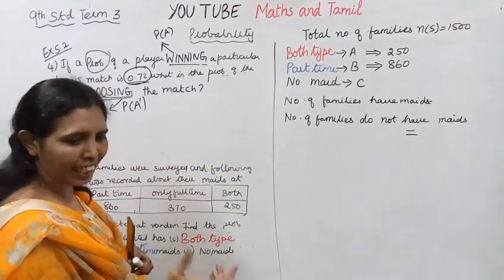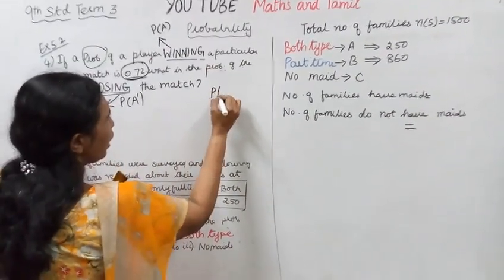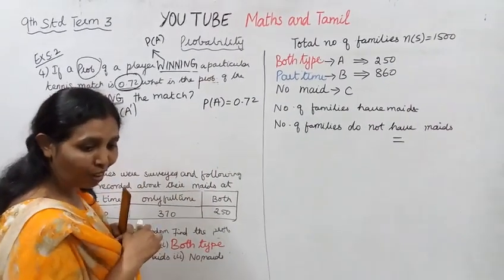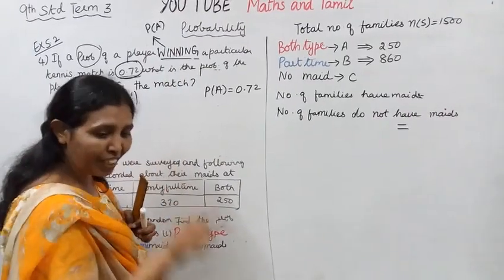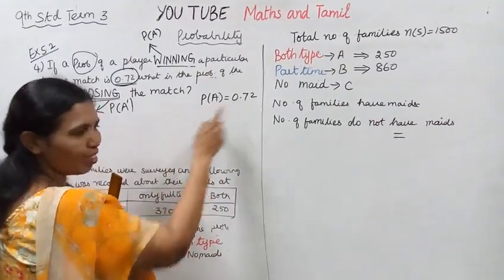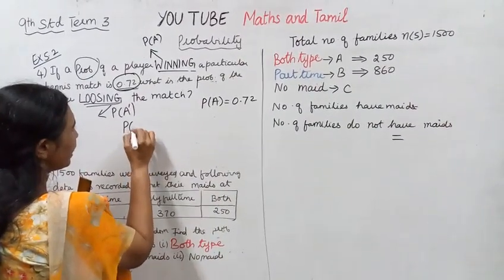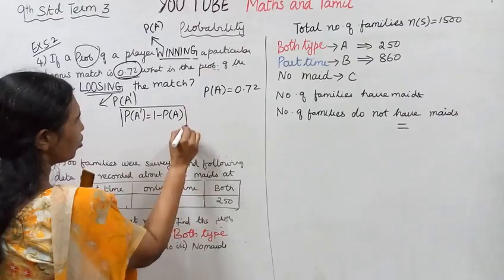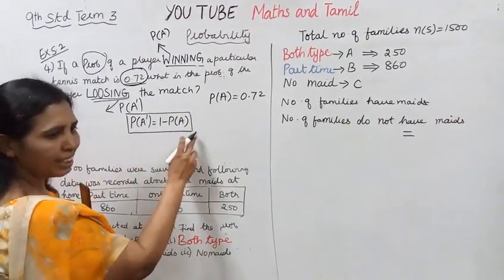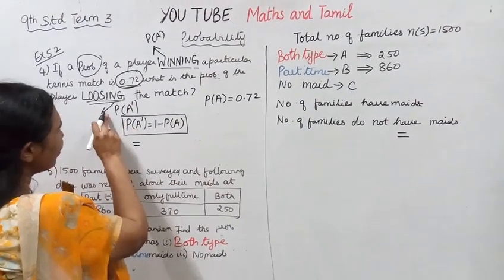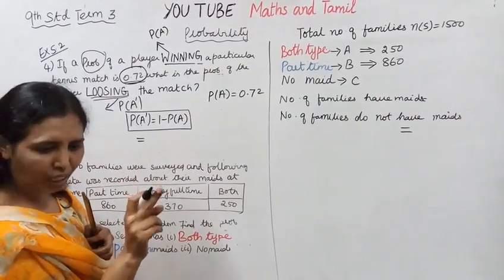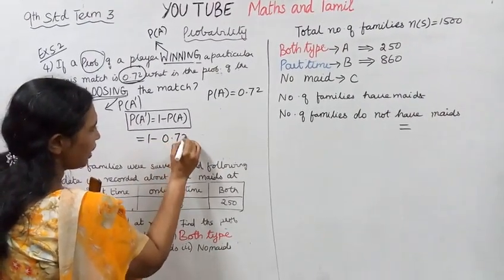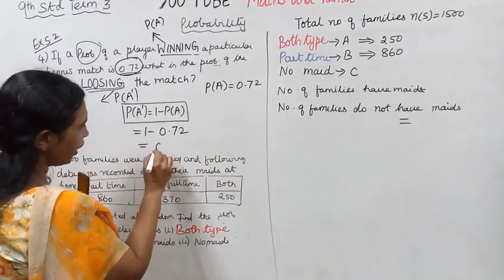P of A is 0.70. The probability of losing is P of A dash. The formula is: P of A dash equals one minus P of A. So P of A dash equals one minus P of A. The probability of the player losing the match is P of A dash equals one minus P of A, which is 1 minus 0.7.